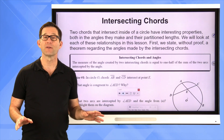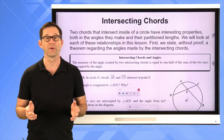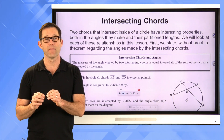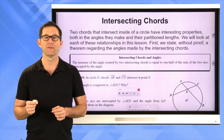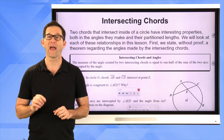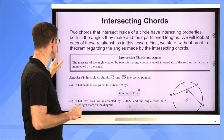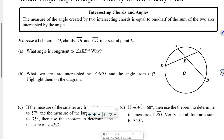Intersecting chords: two chords that intersect inside of a circle have interesting properties both in the angles that they make and their partitioned lengths. We will look at each of these relationships in this lesson. First, we state without proof a theorem regarding the angles made by intersecting chords. The measure of the angle created by two intersecting chords is equal to one half of the sum of the two arcs intercepted by the angle.